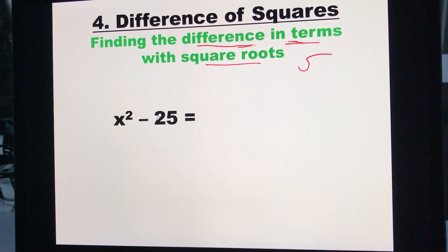For example, we have two terms here. We have x squared take away 25. It's a difference because it's take away and it's important. If this was x squared plus 25, that wouldn't work. That's not a difference of squares. That's a sum of squares. We wouldn't do that. So it has to be difference.